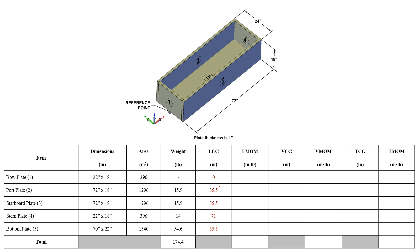That distance is now filled in. My port and starboard plates are symmetric so they have the same distance, and the bottom plate is the same way. The stern plate is 71 inches because I have the half inch distance for the mid-plane there.